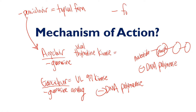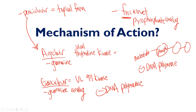Foscarnet — the 'Fos' helps you remember it's a pyrophosphate analog. It doesn't need to worry about being phosphorylated at all. It binds directly to the pyrophosphate binding site on the viral DNA polymerase and inhibits it. It doesn't need to go through the process of turning a nucleoside into a nucleotide monophosphate, diphosphate, and triphosphate. It simply uses this pyrophosphate analog to directly inhibit viral DNA polymerase at the pyrophosphate analog binding site.